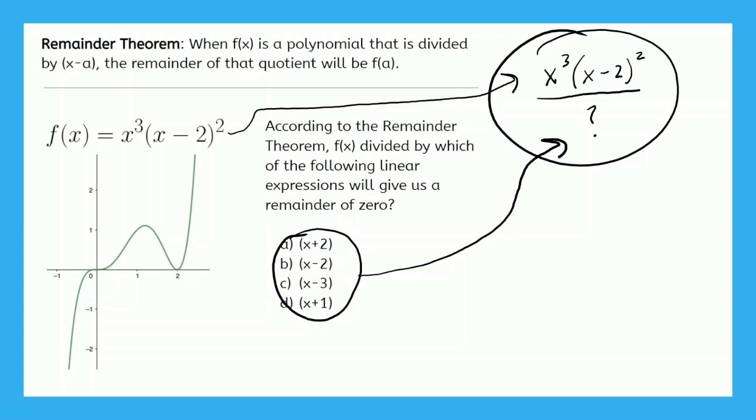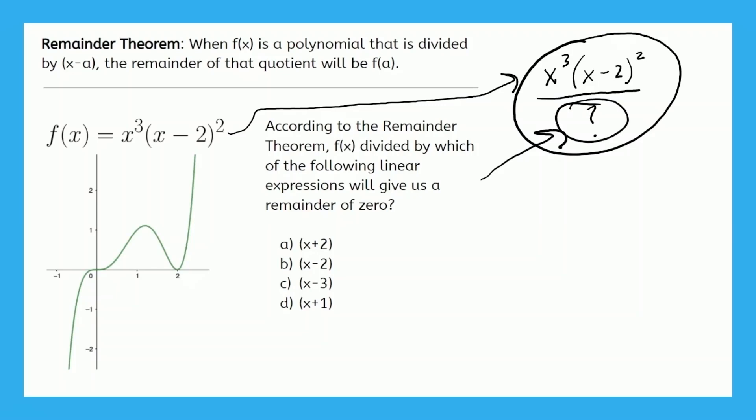Now remember, in this video, we're not doing long division. We're trying to figure out how to answer this question using logic. Okay, now here is the key. In this division problem, in order for there to be no remainder, the denominator needs to be a factor of the numerator. I'll say that again. In order for there to be no remainder in this division problem, the denominator needs to be a factor of the numerator. So which of these four options is a factor of the numerator?